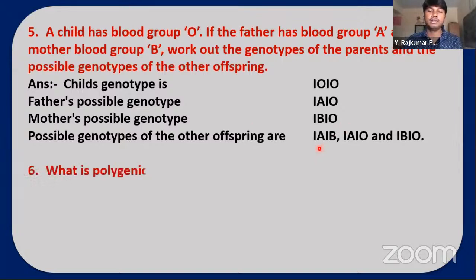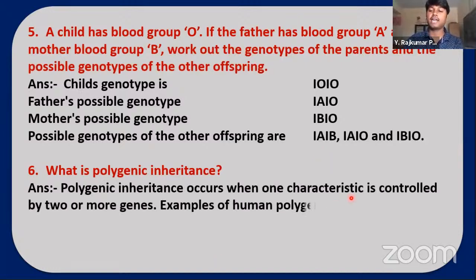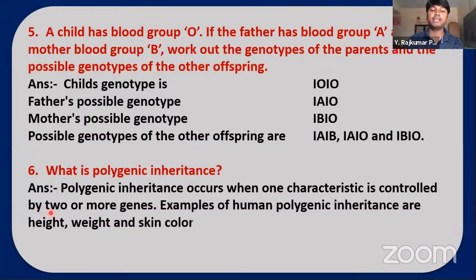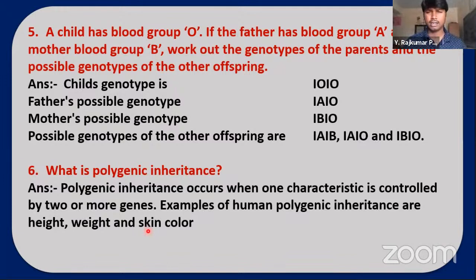Next question: What is polygenic inheritance? Polygenic inheritance occurs when one characteristic is controlled by two or more genes — poly means more, genic means genes. Examples of polygenic inheritance in humans are height, weight, and skin color, all of which are controlled by more than one gene.